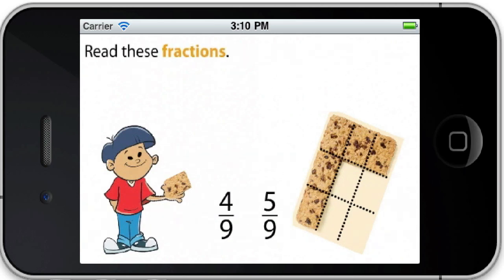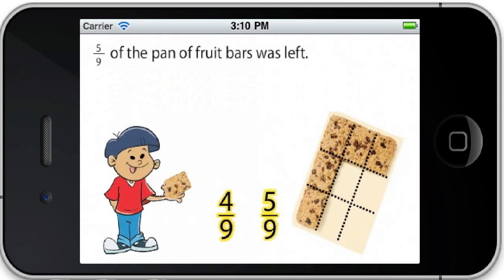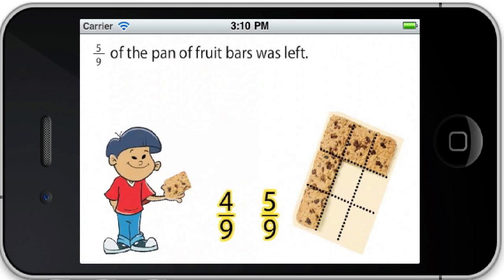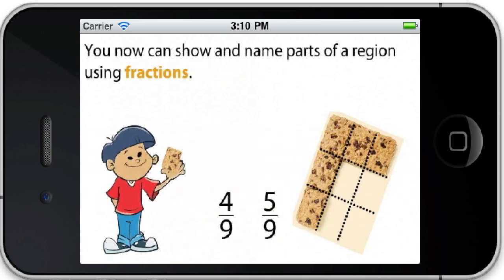Read these fractions. Four-ninths of the pan of fruit bars was served. Five-ninths of the pan of fruit bars was left. You now can show and name parts of a region using fractions.